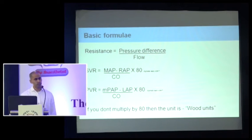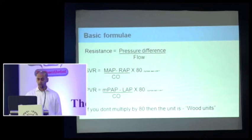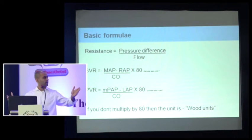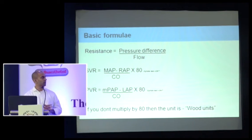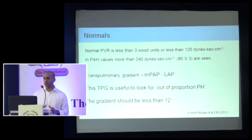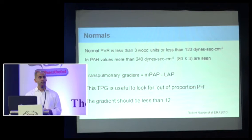Some basic formulae, probably well known to those practicing in the ICU. Resistance equals pressure difference divided by flow. Systemic vascular resistance is mean arterial pressure minus right atrial pressure, divided by cardiac output. Without multiplying by 80, you end up in wood units. Normal PVR should be less than 3 wood units or less than 120 dynes. In PH, 240 is the cutoff, with a gray zone between 120 and 240 that remains a controversial area of active research.